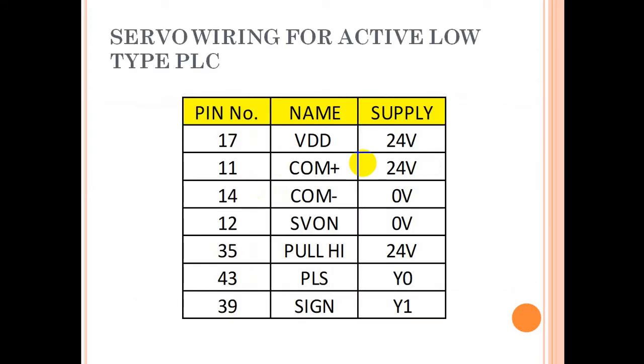Let's discuss active low wiring. In active low wiring, VDD and V com plus need to be connected to 24 volts, and common minus and SV on should be connected to zero. There's also a pull-high pin which is pin number 35. You have to connect it to 24 volts, and pulse PLS and sign...